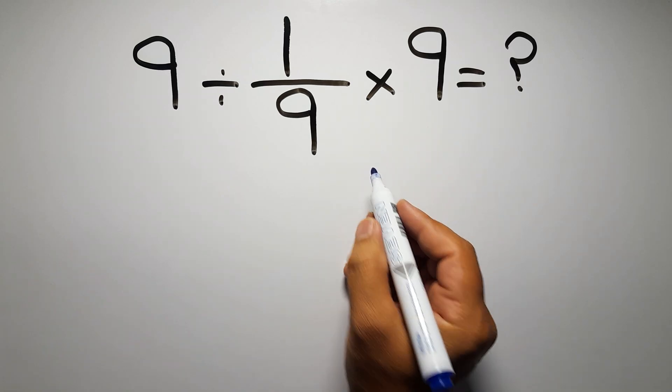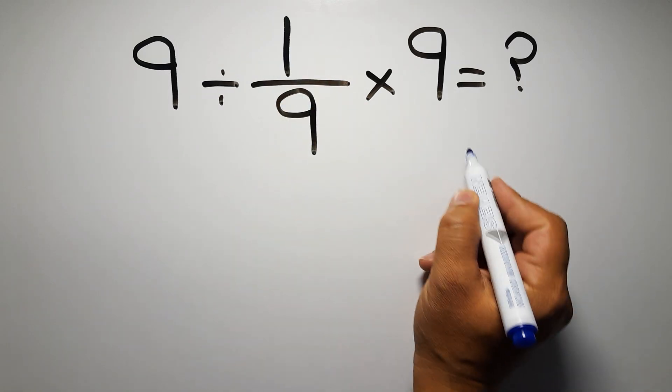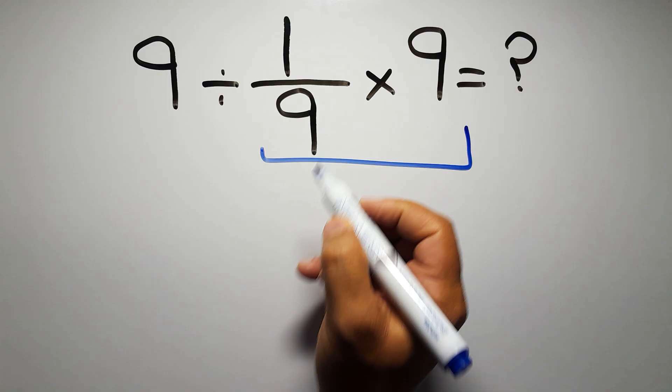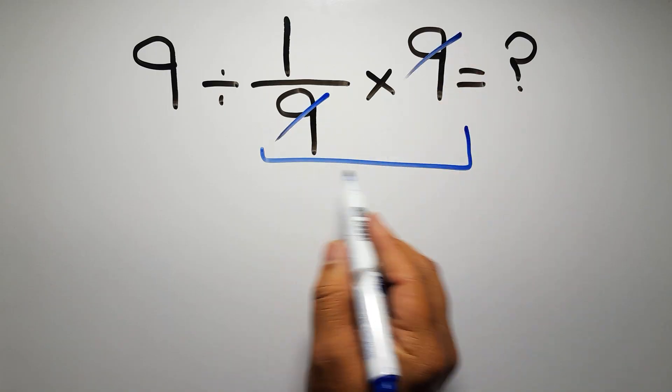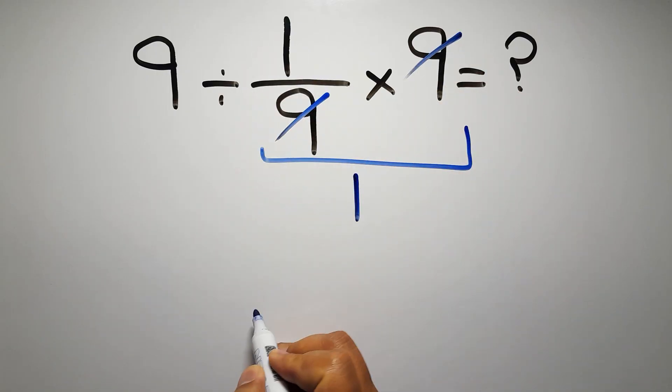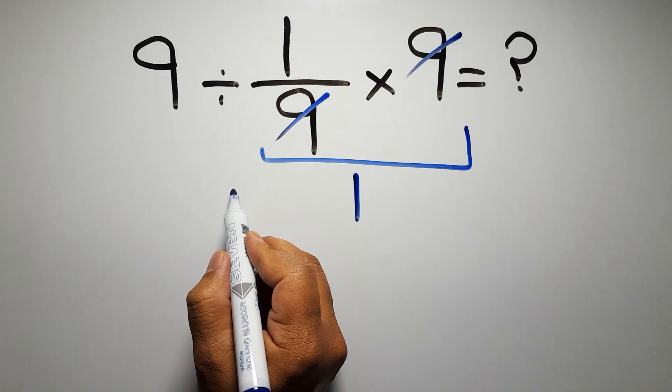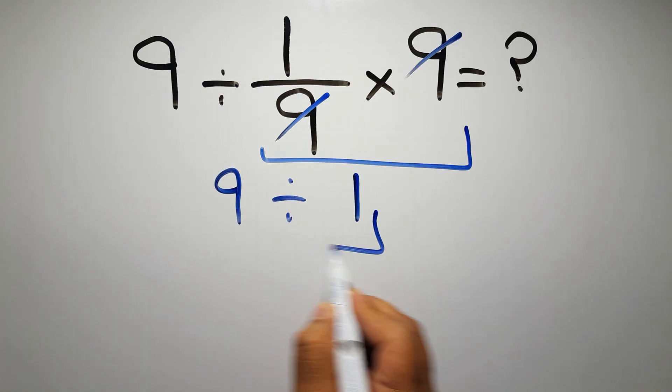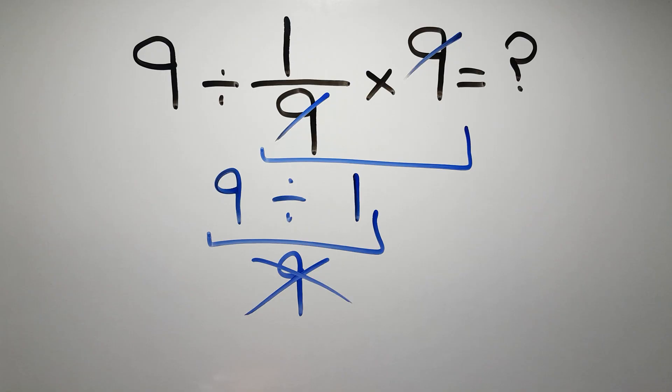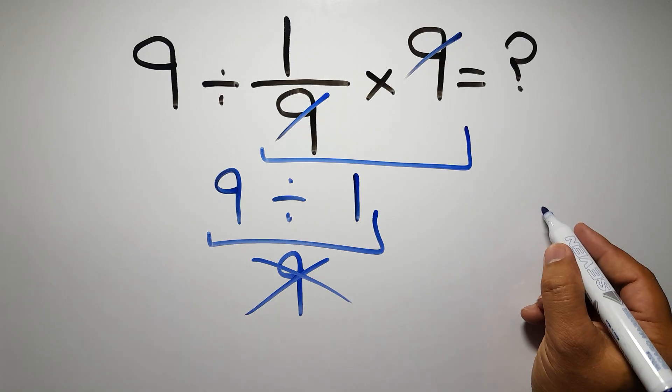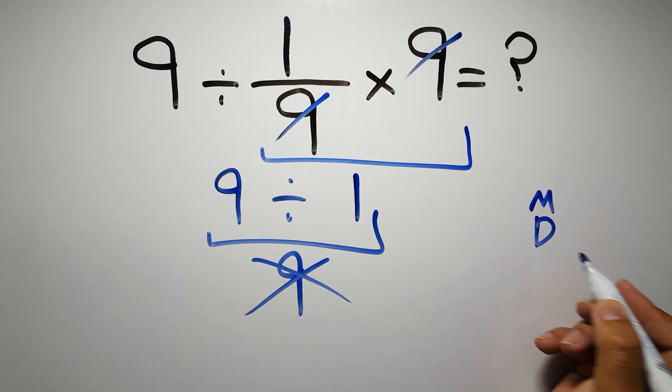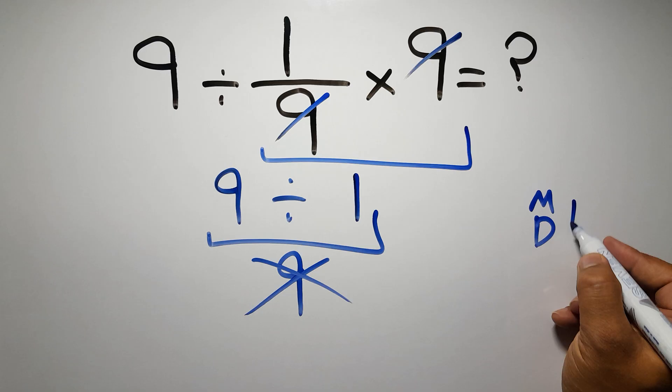First, we do this multiplication: 1 over 9 times 9. We can easily cancel this 9 and this 9, so here we have just 1, and 9 divided by 1 equals 9. But this answer is not correct because, according to the order of operations, multiplication and division have equal priority and we have to work from left to right.